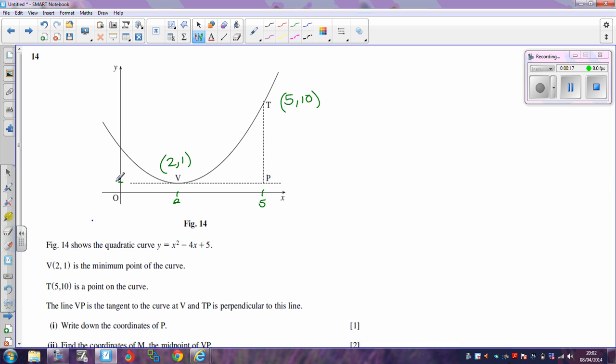And this is 1 on the y-axis, and if we go across to here, we'll find 10 on the y-axis. So the first thing it says is what are the coordinates of P, and it's fairly obvious that P is just going to be 5, 1.